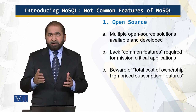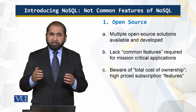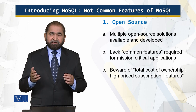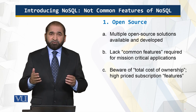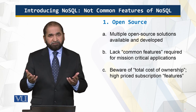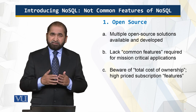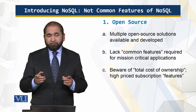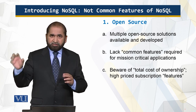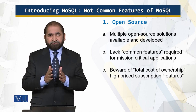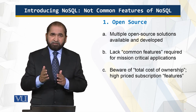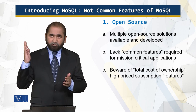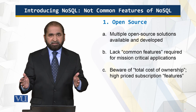When developers had a problem, they looked for a NoSQL open source solution, and when they could not find one, they developed a solution of their own and made it public. So there are as many solutions as there are problems, and they are public and open source. However, these solutions lack common features required for mission-critical businesses, because they were each developed for a specific problem and did not include those features. Those features were being developed by commercial organizations, creating a gap between open source and commercial solutions.